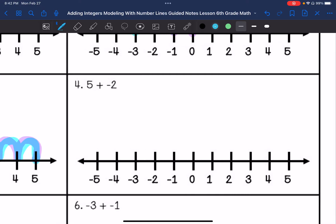Number four: five plus negative two. One, two, three, four, five. And I'm going to go left for negative two. My answer is going to be positive three.